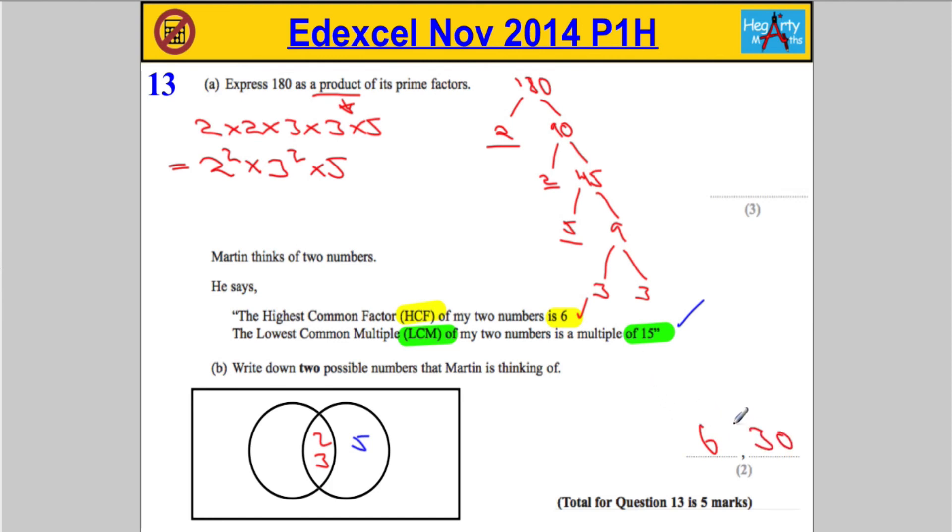And let's see. The highest common factor of 6 and 30 is indeed 6. And the lowest common multiple of 6 and 30 is 180. And 180 is a multiple of 15. So, that's two possible numbers that Martin could have been thinking of.